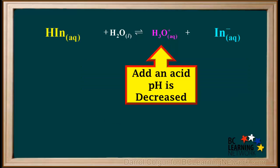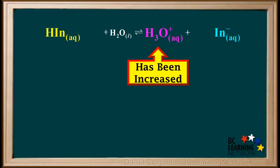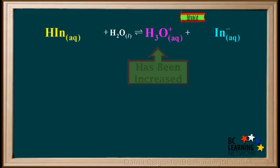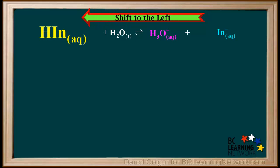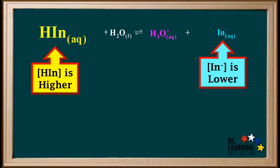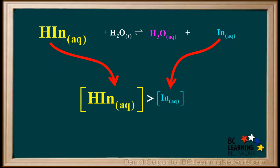If we add an acid to our indicator, which is the same as decreasing the pH, the hydronium ion concentration will quickly increase. The increase in the concentration of H₃O⁺ is a stress. The equilibrium will counteract this stress by shifting to the left. The result is the concentration of the acid form HIn is higher than it was originally, and the concentration of the base form In⁻ is lower than it was originally. So when an acid is added to an indicator, the concentration of the acid form HIn becomes greater than the concentration of the base form In⁻.